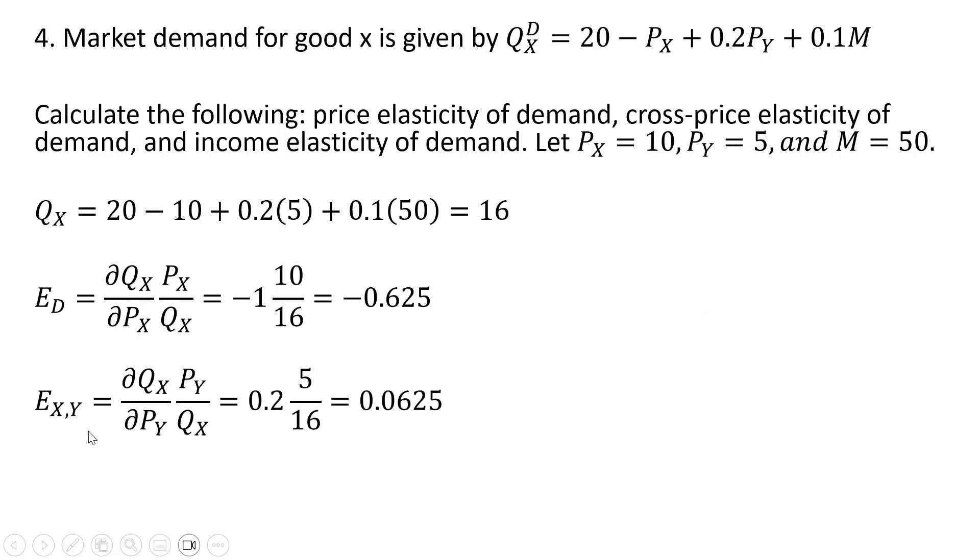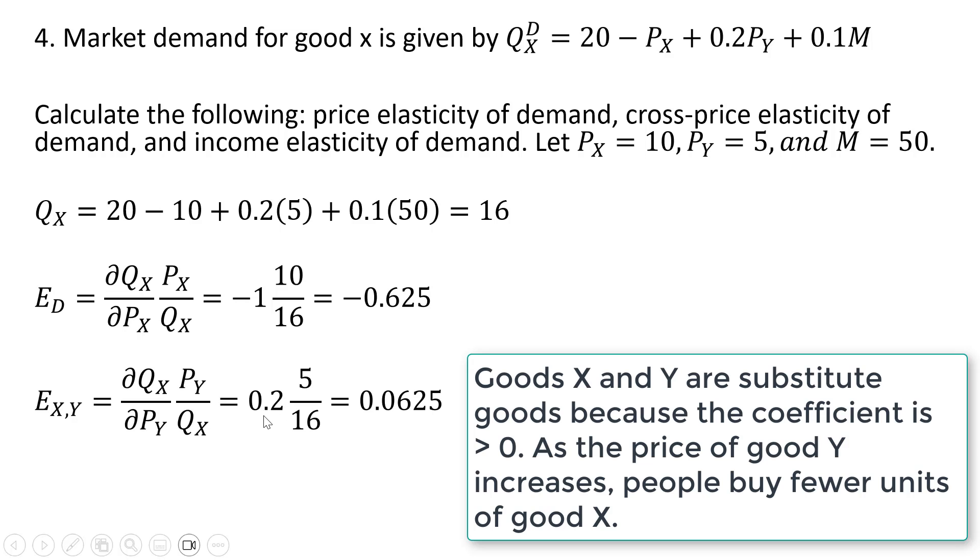As for the cross price elasticity of demand, we're taking the partial derivative of the demand equation, this time with respect to P subscript Y. We get back the coefficient on that term, or 0.2. Okay, so that's our partial derivative result, the 0.2. And then we're going to multiply it by the price of good Y, which we're told is 5, and the quantity that we solved for 16, and we get this answer.